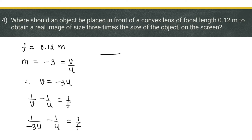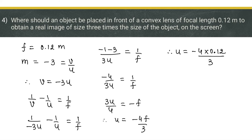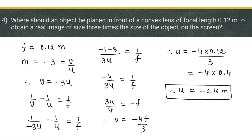Using the lens formula and taking the LCM and simplifying: -4/(3u) = 1/f. So u = -4f/3. Substituting f = 0.12 meters: u = -4 × 0.12/3 = -0.16 meters. The object distance is -0.16 meters.